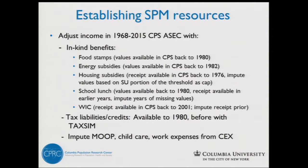On the resources side, things keep falling out of the CPS the further back you go in time. The move falls out in 2008, you lose food stamps prior to 1980, housing subsidies prior to 1976 or 1975, and there are no tax estimates on the files prior to 1980. So we try to do various imputations to the resources side to add missing data back to the files. We do our own tax calculators for years prior to 1980, and are able therefore to create what we call a historical SPM, or a historical version of the SPM.